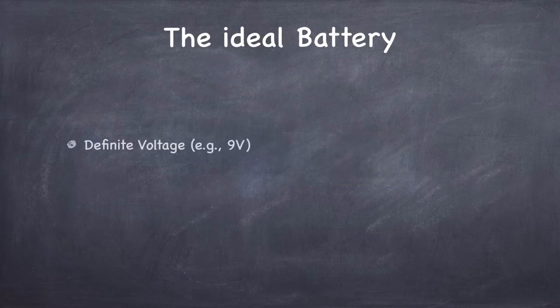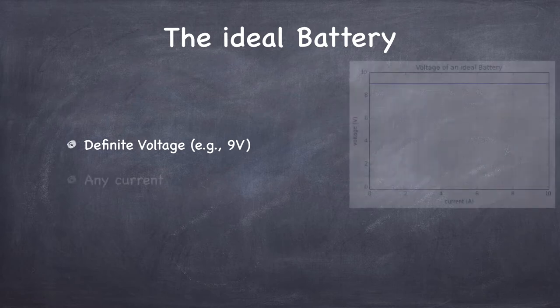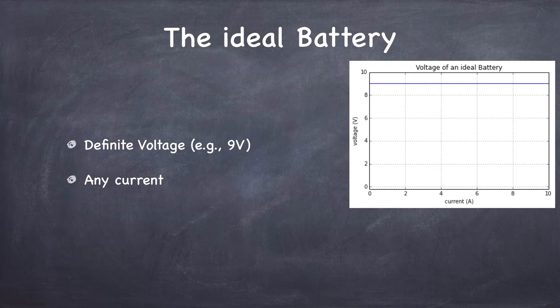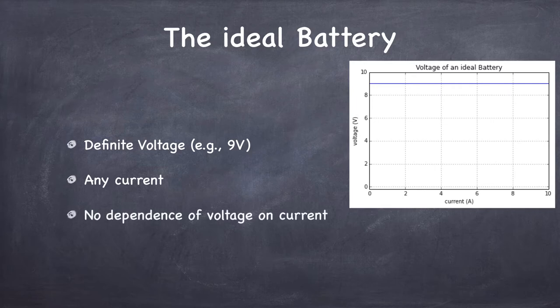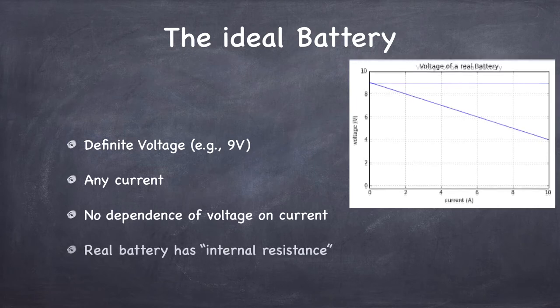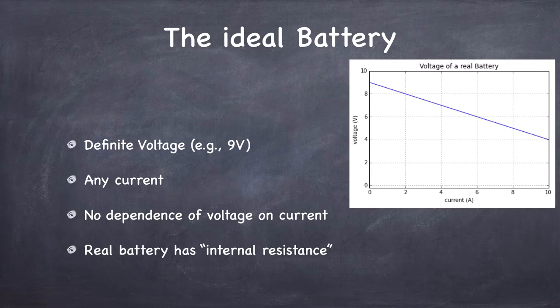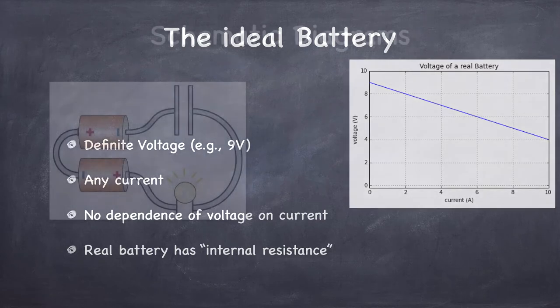We'll also be dealing a lot with batteries. An ideal battery is one whose voltage doesn't depend on the current that flows through it — so a 9-volt battery stays at exactly 9 volts regardless of current. In practice, real batteries have an internal resistance, so as you draw more current the voltage drops. If the current drawn is small enough, you can approximate a real battery as ideal, which is what we'll do most of the time.